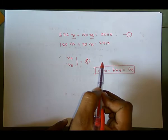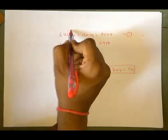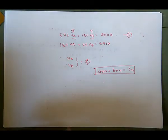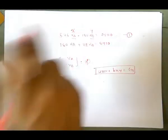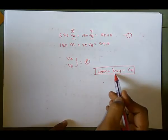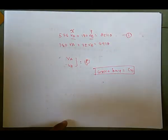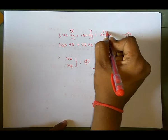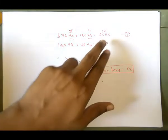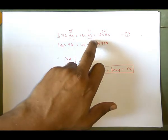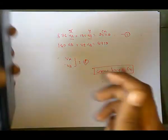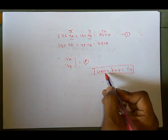We compare our equation with this format. Here, x corresponds to VA and y corresponds to VB. So a_n equals 576, b_n equals 180, and c_n equals 25110. Take care that c_n is on the right side of the equals sign.